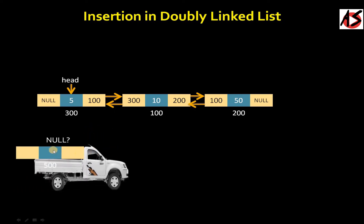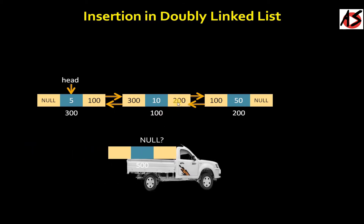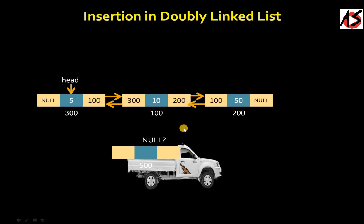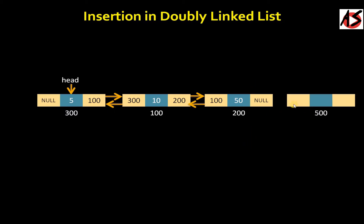Now suppose if you want to insert the node at the end of the list. You take a new node and always look for a null right pointer. Here the first node's right pointer is not null, so you move ahead and check the second node — also not null. Moving ahead to the third node, you can see the right pointer is null, so it is the last node. You insert the new node after it: add the data part 75, set its right pointer null, then set the earlier tail node's right pointer to the new node, and the new node's left pointer to the earlier last node.